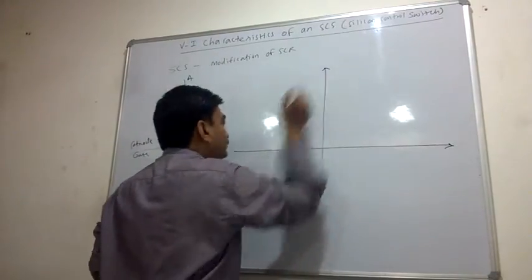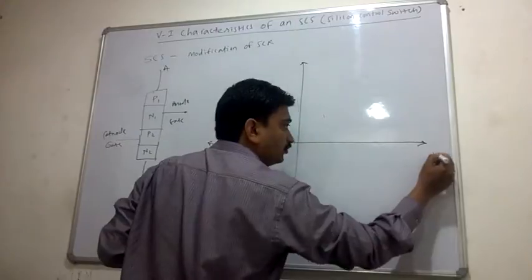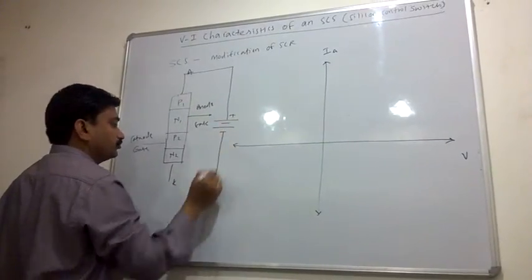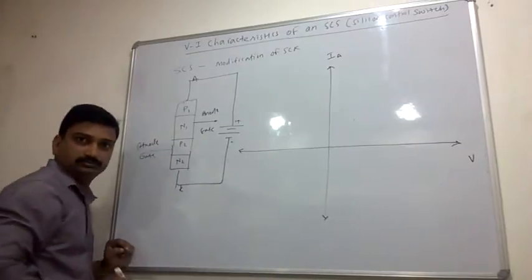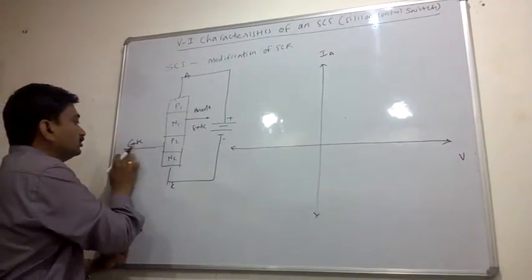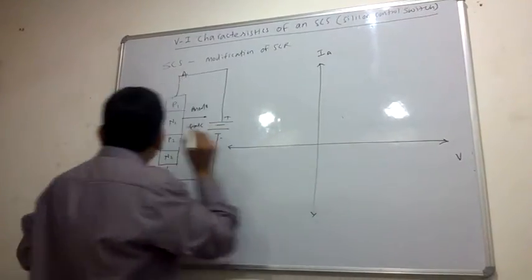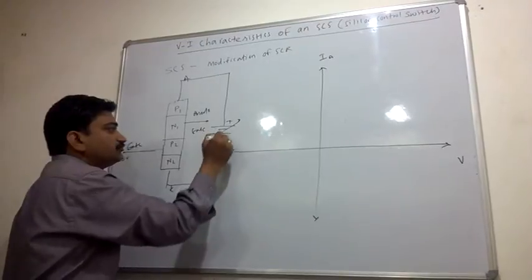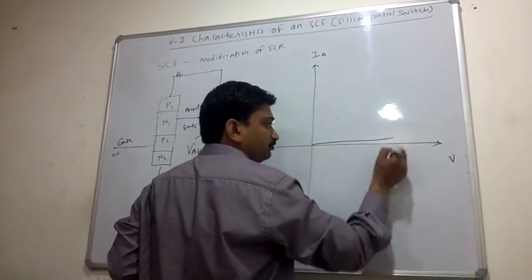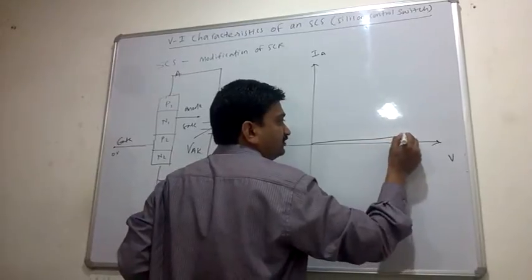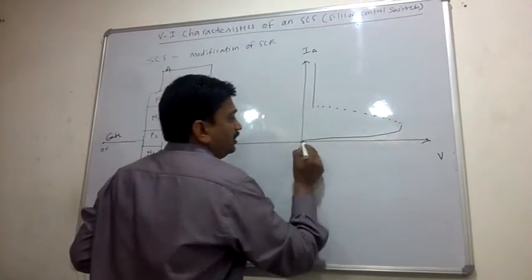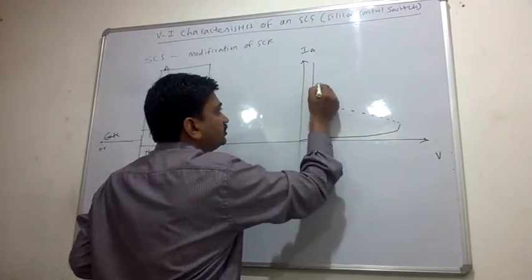Looking at the voltage-current (anode current) graph: the anode is connected to positive and the cathode to negative. If you provide 0 volts and gradually increase the voltage between anode and cathode, you get a curve showing the blocking period or blocking state, after which the device suddenly turns on. This is the forward blocking state, then the transition state, and then the on state.